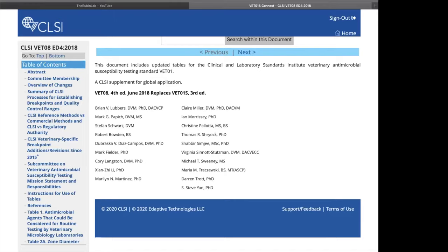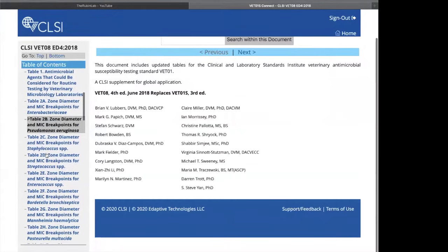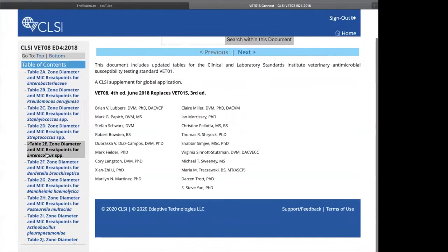This is the online version of the CLSI guidelines where we find our interpretive criteria for susceptibility tests. And as you can see over here on the left, we have all of the different organisms we might be interested in listed. This is where we'll find each of our sets of breakpoints.